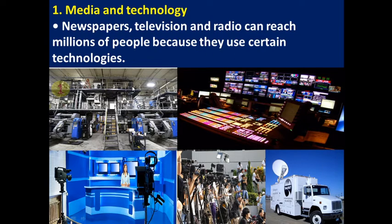The first image shows a news printing room with different technologies. They print millions of newspapers in a day, and in order to print a large number of newspapers in a very short period of time, they need advanced technology. This first picture is about the printing of newspapers and magazines.